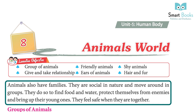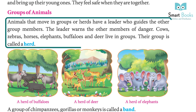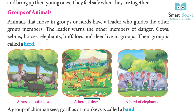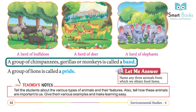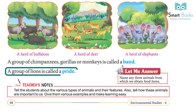Animals that move in groups or herds have a leader who guides the other group members. The leader warns the other members of danger. Cows, zebras, horses, elephants, buffaloes, and deer live in groups called a herd — a herd of buffaloes, a herd of deer, a herd of elephants. A group of chimpanzees, gorillas, and monkeys is called a band. A group of lions is called a pride.